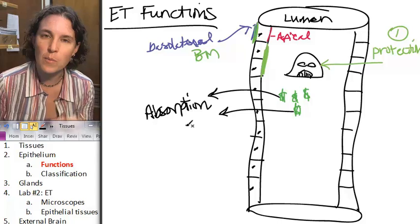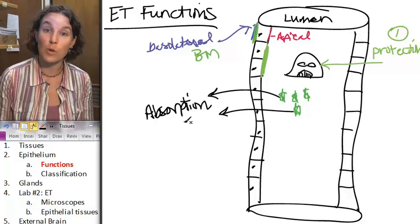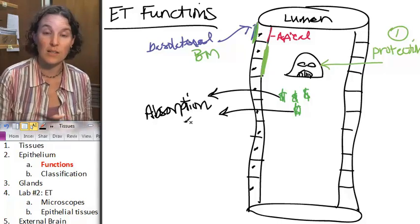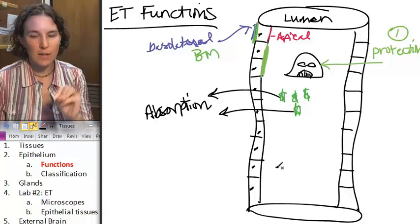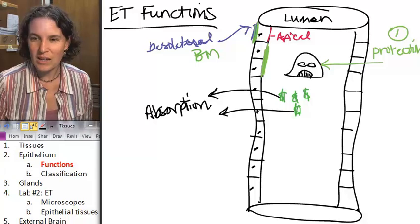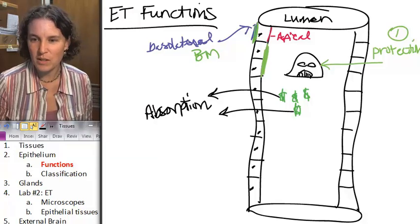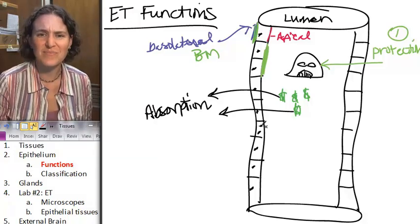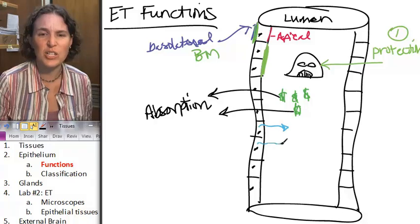One of the functions of the epithelial tissue is to allow the absorption of stuff from the outside into the body. Sometimes the epithelium can say, you know what? We need to get rid of some stuff.